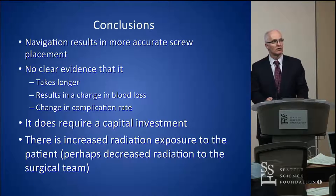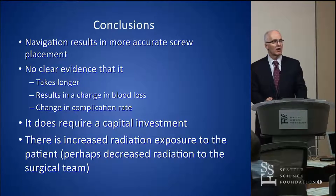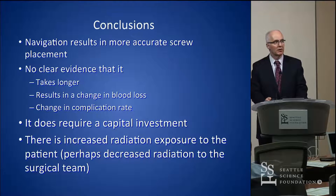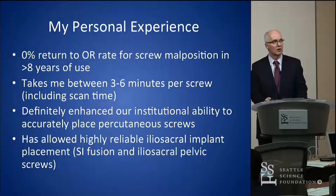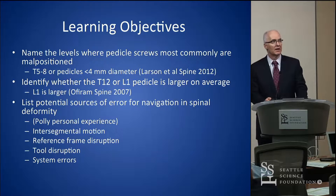My conclusions: navigation does result in more accurate screw placement. It's not clear it takes longer — I don't think it does in my hands. There is increased radiation exposure to the patient but decreased exposure to the surgical team. Zero percent return to OR; I'm about three to six minutes per screw including the nav spin and check spin, and it's allowed us to do very difficult things with high reliability. Take-home points: T5 to T8 is the toughest area in the thoracolumbar spine; T12 is reliably bigger than L1; there are many sources of potential error, and intersegmental motion and reference frame disruption are the major ones.